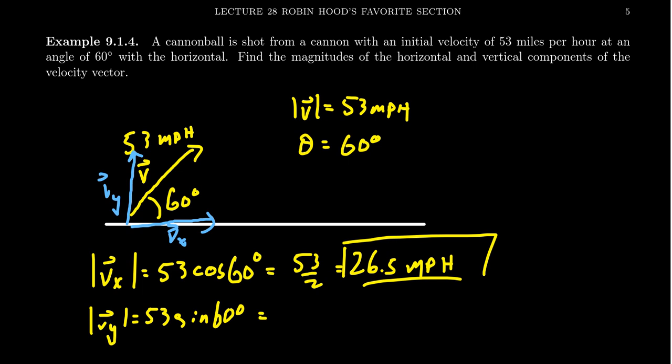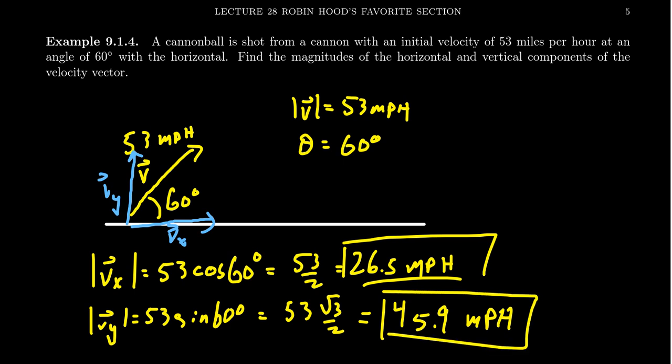The magnitude of Vy equals 53 times sine of 60 degrees. Sine of 60 degrees equals the square root of 3 over 2. Using a calculator to approximate, you'll end up with 45.9 miles per hour traveling vertically. Notice how this thing is angled more upward, so the horizontal magnitude is actually smaller than the vertical because it's pointing more upward than to the right.